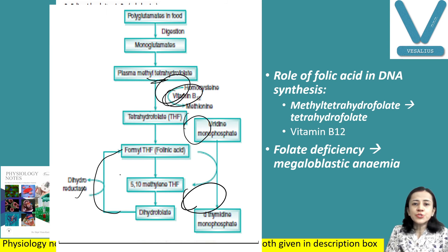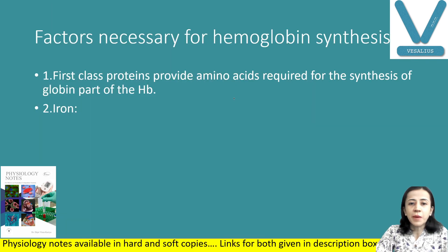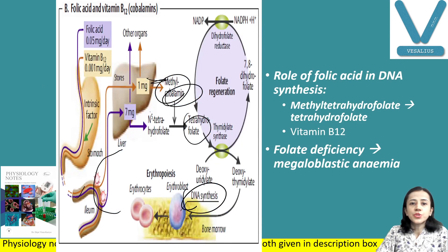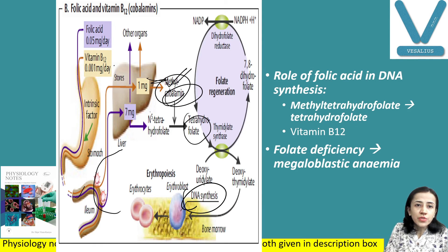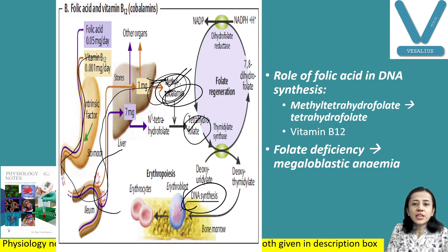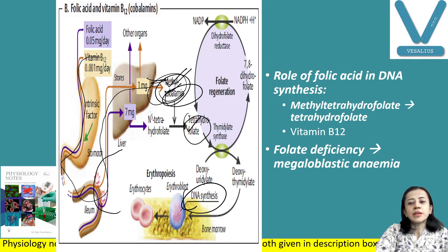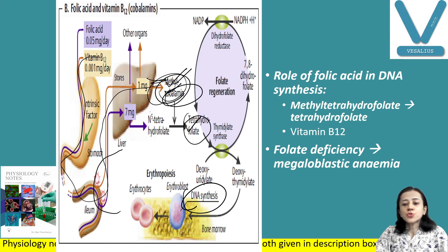In summary, methylcobalamin — the form of vitamin B12 absorbed and stored in the liver — and folic acid as tetrahydrofolate are both required for DNA synthesis in RBC maturation. These are your maturation factors.